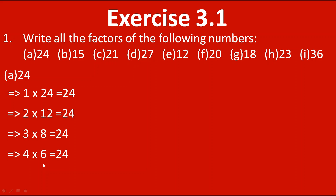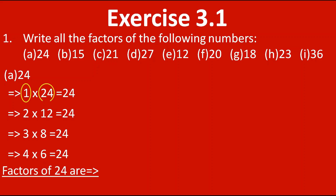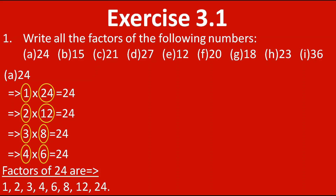Next we find out about 7, but in 7's table we won't find 24 — 7 threes are 21. So we move towards the 8th table, but here again we have written 8 threes are 24, so it will reverse. If it starts reversing, we stop there. So the factors of 24 are 1, 2, 3, 4, 6, 8, 12 and 24.